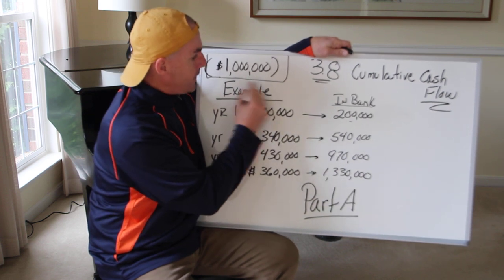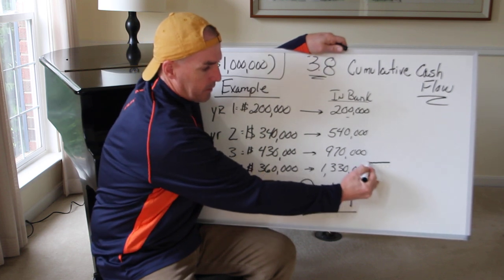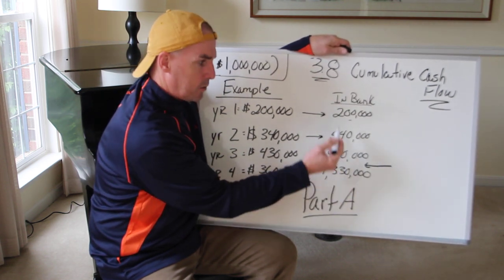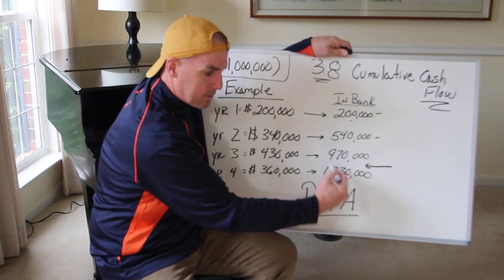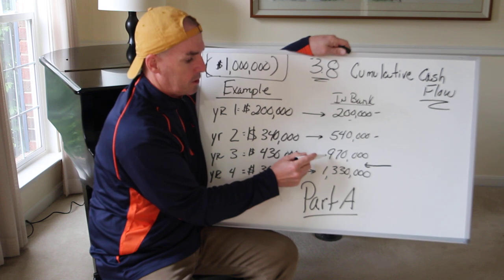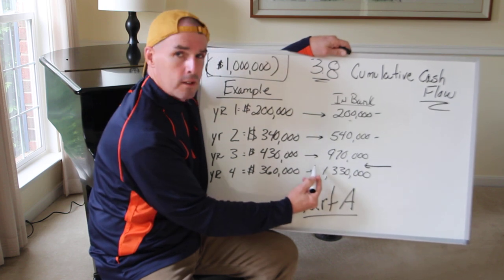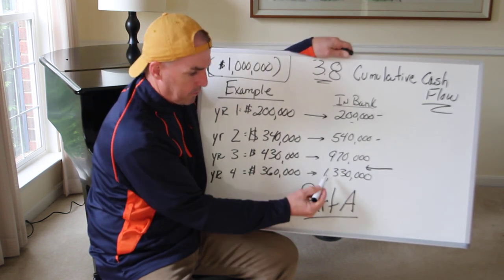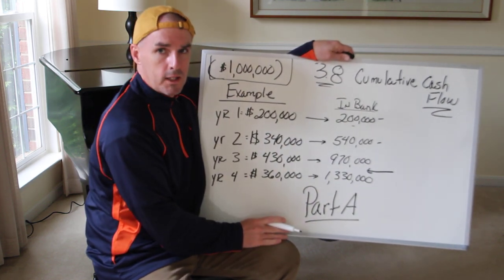The Bills want to know when, at what point are they going to get that money back? Well, it's not at the end of year three, so they have to keep me another year. So it's going to take at least three years and how many months? That's what we need to figure out with this cumulative cash flow. It's going to take three years, and somewhere in that fourth year the Bills are going to get their money back. Because you can see at the end of year four they've got $1,330,000. When are they going to get that million dollars back? That's what they're trying to figure out.